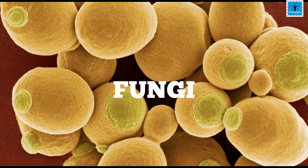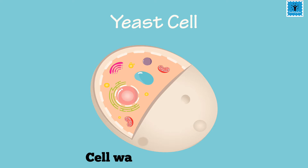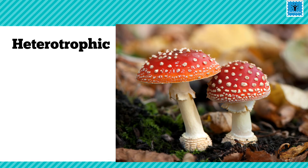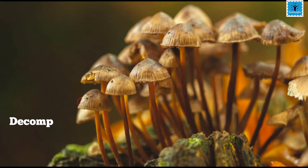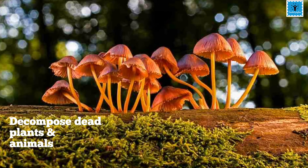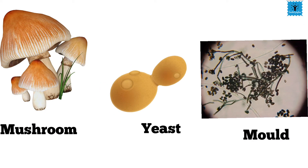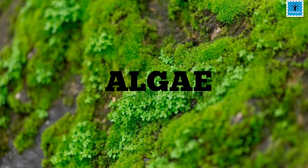Fungi can be unicellular or multicellular. They have walls which are made of chitin. They cannot make their own food and are heterotrophic in nature — they decompose dead plants and animals and extract nutrients from them. Some of the primary forms of fungi are mushrooms, yeast, and mold.